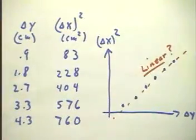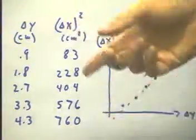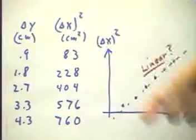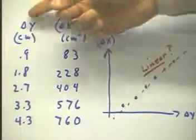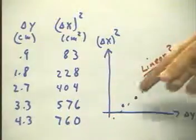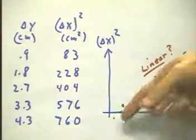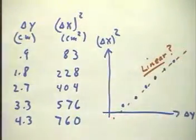It turns out that if we first square our delta x's and then plot those versus delta y, we get a graph that's pretty much linear except maybe for this first point.